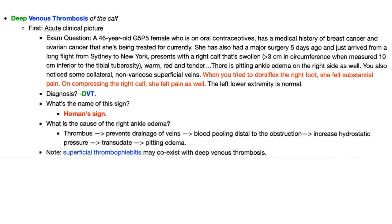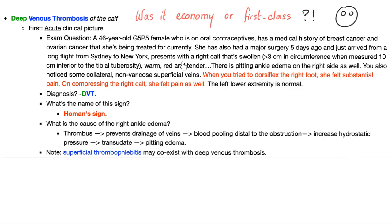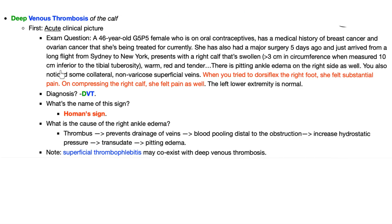Here is the classic DVT case: a 46-year-old G5P5 female on oral contraceptives with a medical history of breast cancer and ovarian cancer currently being treated, who had major surgery five days ago and just arrived from a long flight from Sydney to New York. She presents with a right calf that's swollen — more than 3 centimeters in circumference when measured 10 centimeters inferior to the tibial tuberosity. Her right calf is warm, red, and tender, with pitting ankle edema on the right side and collateral non-variceal superficial veins.